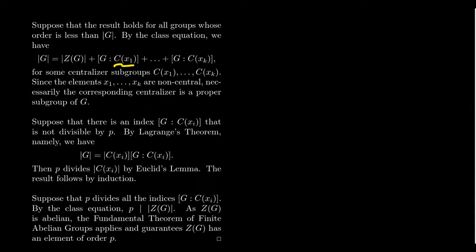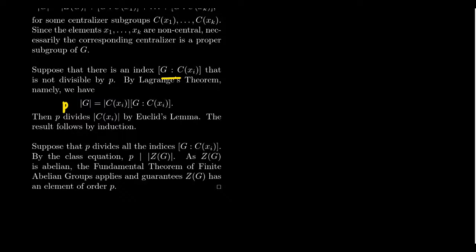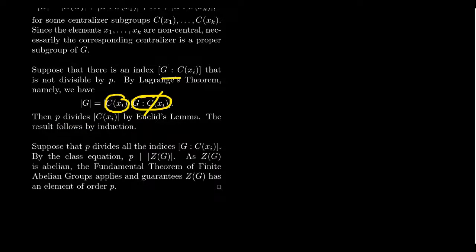Suppose there is some index [G : C(x_i)] not divisible by P. By Lagrange's theorem, the order of G equals the order of C(x_i) times the index. Since P divides |G| and P is prime, by Euclid's lemma, P must divide one of the factors. By assumption it doesn't divide the index, so P divides the order of C(x_i). Since C(x_i) is a proper subgroup of strictly smaller order, by the inductive hypothesis it has an element of order P, and since it's a subset of G, so does G.